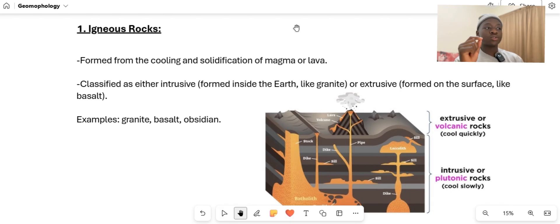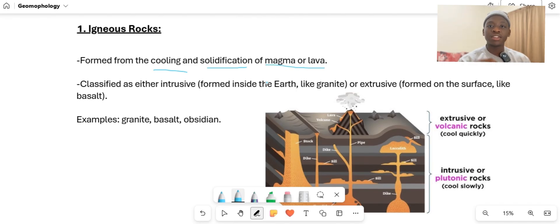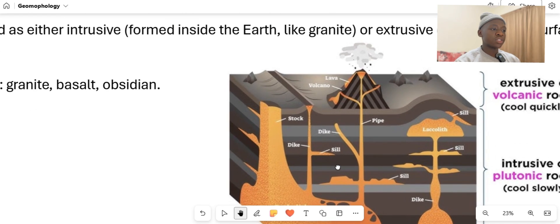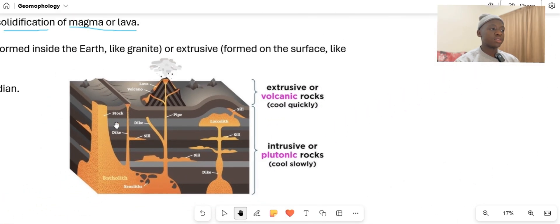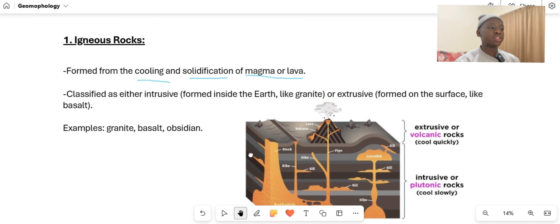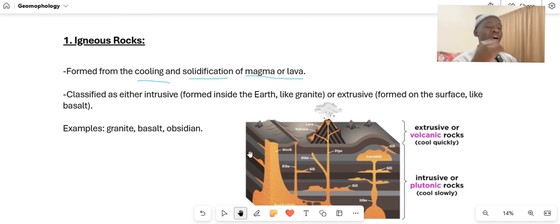First and foremost, we're going to start with the igneous rock. The igneous rock is formed from the cooling and the solidification of magma or lava. Magma or lava, they're just referring to this red or orange thing that you see on this diagram. We're going to go into more detail with it.